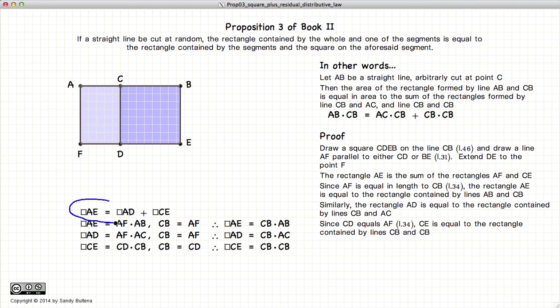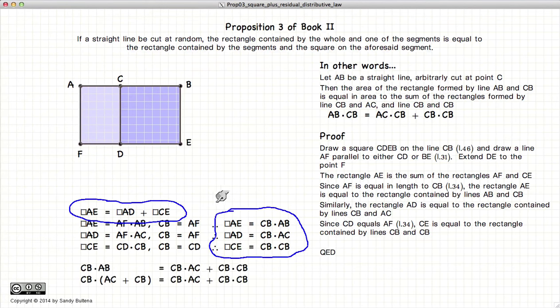So now if we look at what we have, we have an equation for the equality of the rectangles and a definition of what those rectangles are. And we end up with CB times AB is equal to CB times AC plus CB squared.